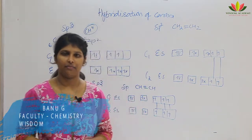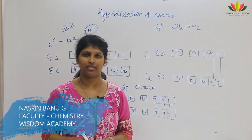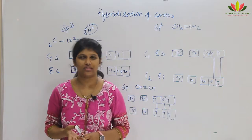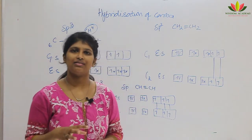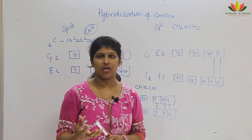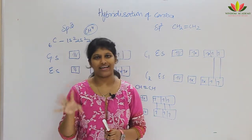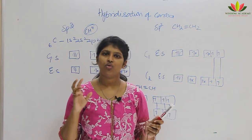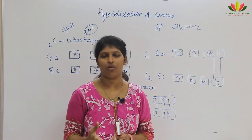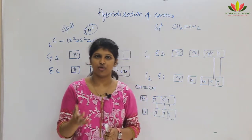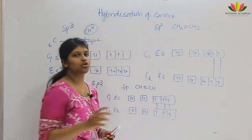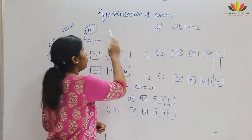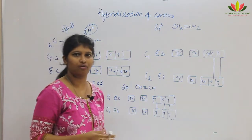Hello students, welcome to Wisdom Academy. I am Nasreen and today we will be seeing hybridization of carbon. We have already heard about sp3, sp2, and sp carbons — these are different types of carbon. This classification is based on hybridization. Hybridization is when two atomic orbitals intermix with each other to form a new orbital called a hybrid orbital, and that process is called hybridization. For elements we have atomic or molecular orbitals, but for compounds, hybridization must occur to produce a new orbital.